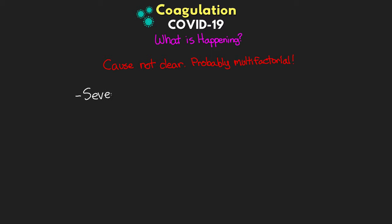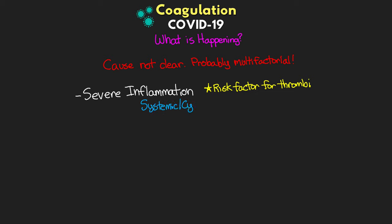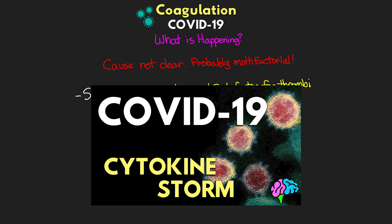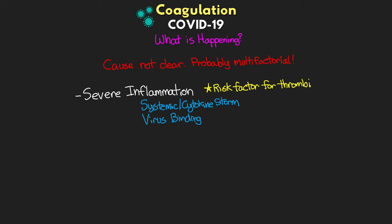The first contributing factor is the severe inflammation taking place, which is itself a risk factor for forming thrombi. This can result from systemic inflammation and potentially the cytokine storm. We also have the issue of the virus binding to endothelial cells — when the virus infects these cells, it triggers an immune system attack leading to cell damage and death, which activates the clotting cascade.